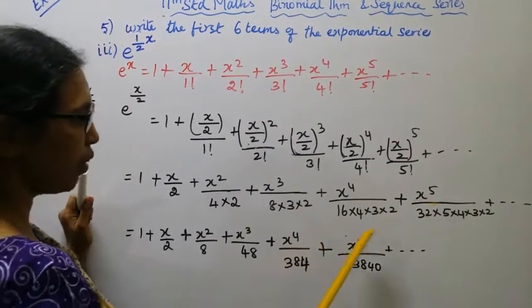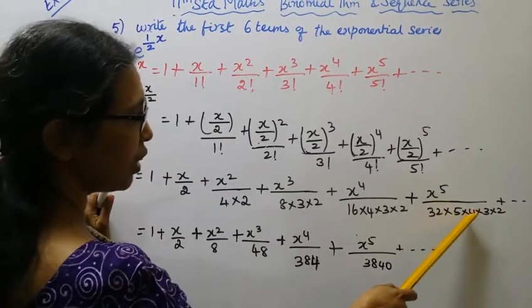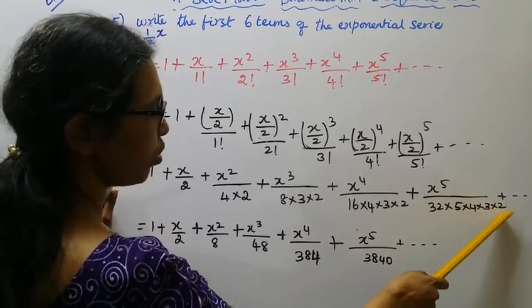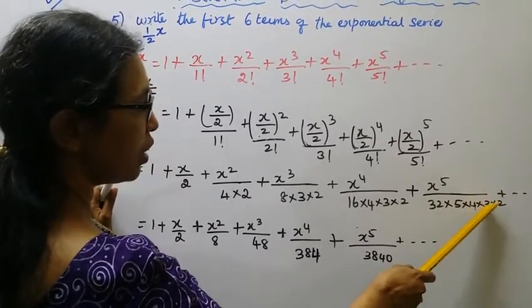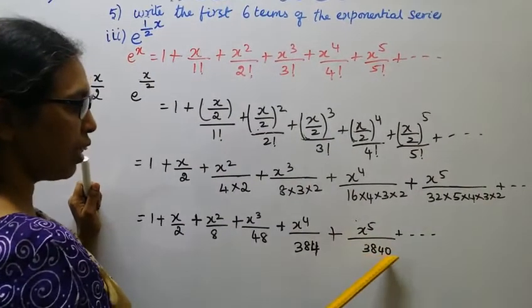plus x power 5 by 32, 5s are 160, 160 into 4, 3s are 12, 12 twos are 24, 16 into 24 is 3,840.